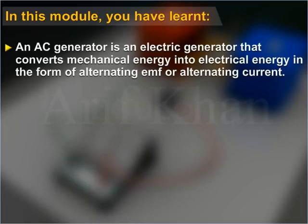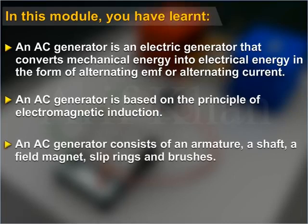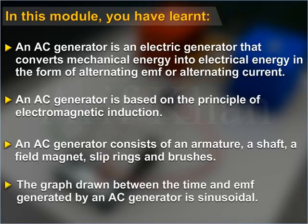In this module you have learned: an AC generator converts mechanical energy into electrical energy in the form of alternating EMF or alternating current. It is based on the principle of electromagnetic induction and consists of an armature, a shaft, a field magnet, slip rings, and brushes. The graph between time and EMF generated by an AC generator is sinusoidal.